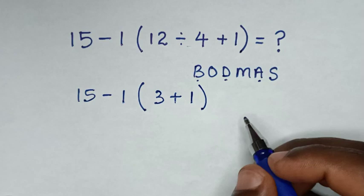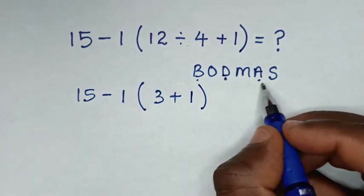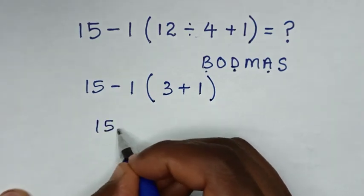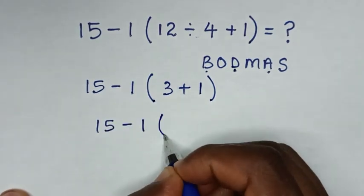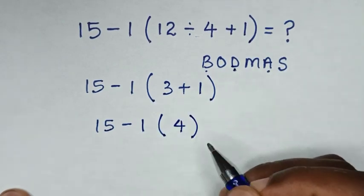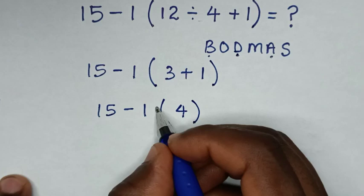After we deal with division, we deal with addition inside the bracket. So 3 plus 1 is 4. It becomes 15 minus 1 times 4.